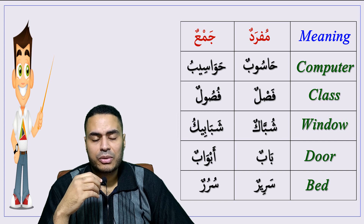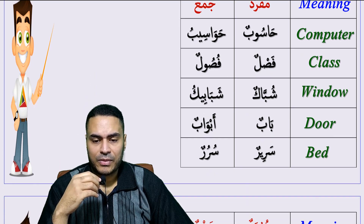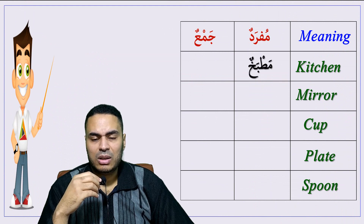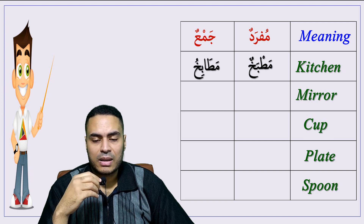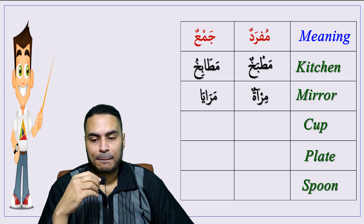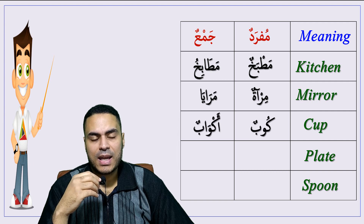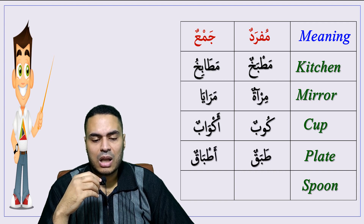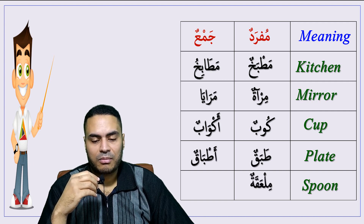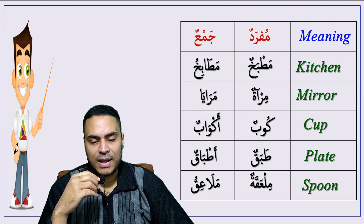Bed — sarirun, plural: sururun. Kitchen — matbakhun, plural: matabikh. Mirror — mir-atun, plural: maraya. Cup — kubun, plural: akwabun. Plate — tabaqun, plural: atabiq. Spoon — milaqatun, plural: malaqiu.